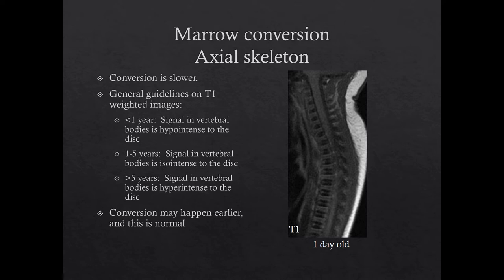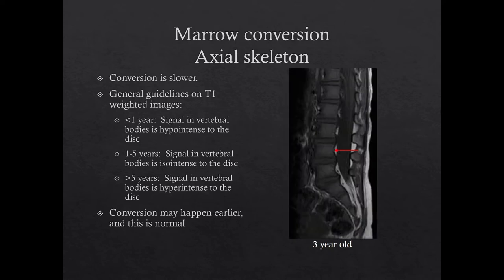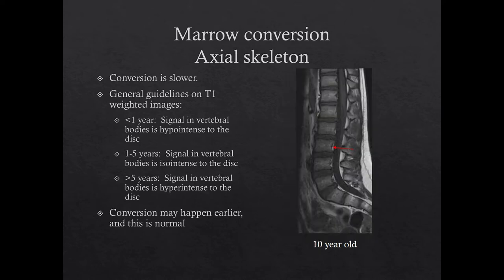Here you can see the vertebral body signal is hypo-intense to the adjacent discs in this one-day-old. Note that often the signal you are seeing in the region of the disc may include the disc and the adjacent unossified cartilaginous end plates depending on the resolution of your scan. In this three-year-old, the marrow signal is now of higher signal than the adjacent disc, and even higher in signal in this 10-year-old.